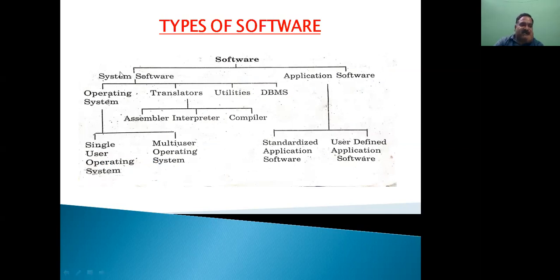System software is further classified into four categories: these are operating system, translators, utilities, and DBMS.